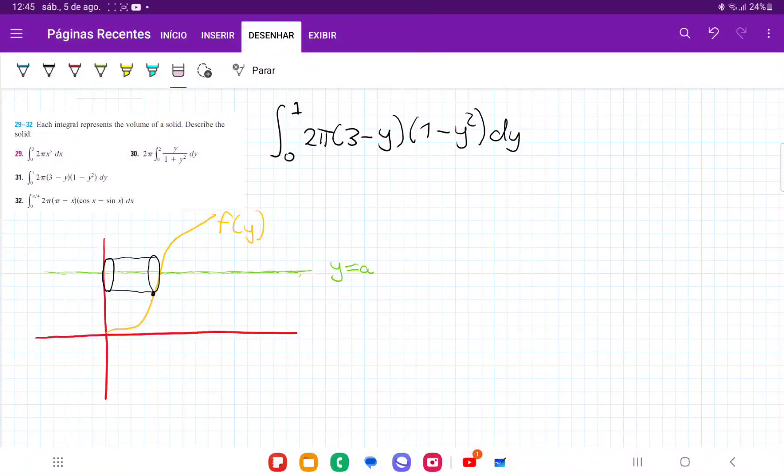So for number 31, we're given this interval, and we have to kind of reverse engineer it and describe the solid of revolution. This does have a dy, so we know that we're summing these shells across the y-axis, or we're summing them up vertically.